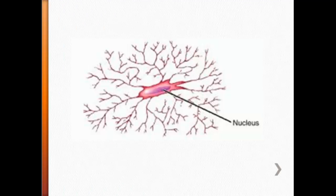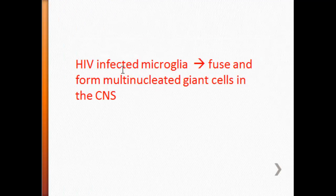But there's another important thing regarding microglia that you have to know, especially if you're doing your step 1, and that is that HIV infected microglia, they fuse together, and they form these multi-nucleated giant cells in the CNS. The giant cell is just a culmination of several different microglia fusing together, joining together. So, you get these multi-nucleated giant cells. And this happens when you have HIV infection going on.